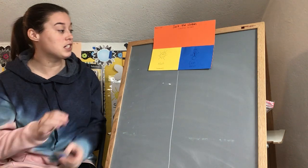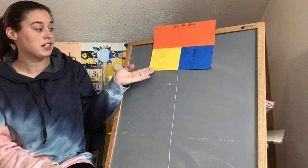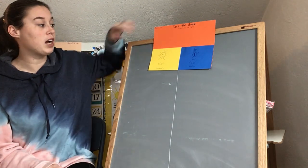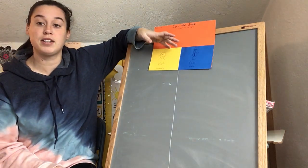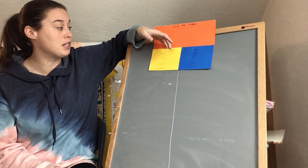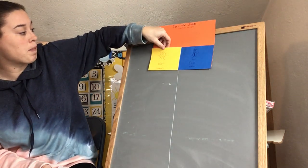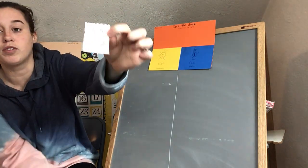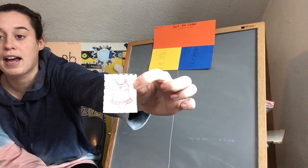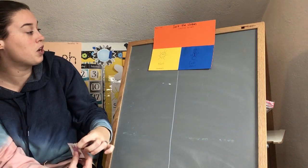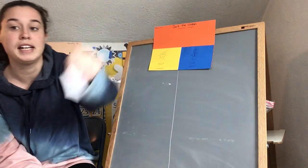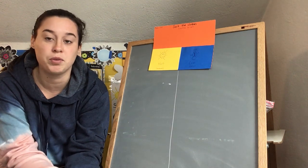So this is our hot and cold clothing sort. You guys have this paper at your house. It was in your packet and it's little pockets so the articles of clothing that we have for you guys will go either in the hot pocket or in the cold pocket depending on when you guys would wear them.